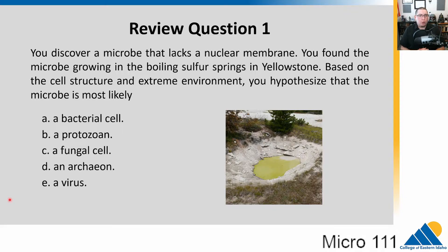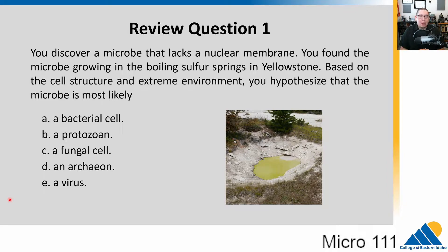You discover a microbe. It lacks a nuclear membrane, and you found the microbe growing in a boiling sulfur spring in Yellowstone. So based on that cell structure and the extreme environment, you would hypothesize that this microbe is most likely: A, a bacterial cell; B, a protozoan; C, a fungal cell; D, an archaean; or E, a virus?